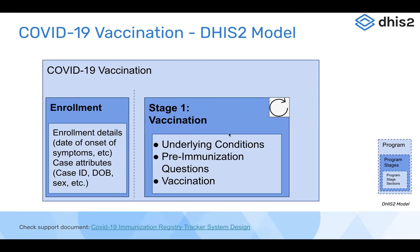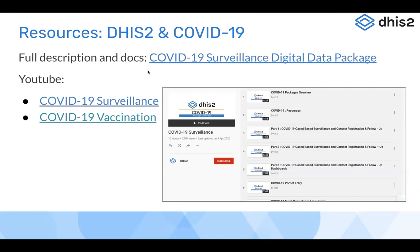During demonstration sessions for web and Android, these two programs — COVID-19 case surveillance and COVID-19 vaccination — will be covered in detail as the base examples for all demonstrations and exercises. The full description documentation for COVID-19 packages is available with embedded links, and YouTube videos for COVID-19 surveillance and vaccination use cases can be referred to for a better understanding of how these models were developed and implemented in DHIS2.